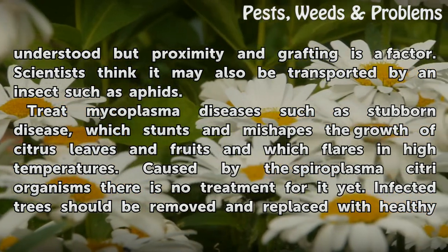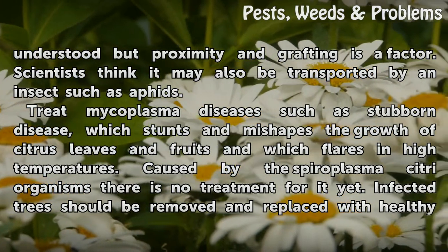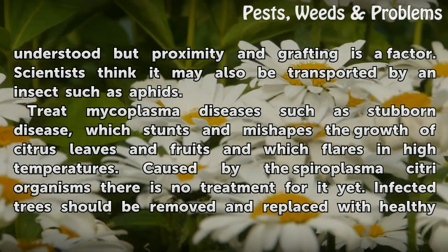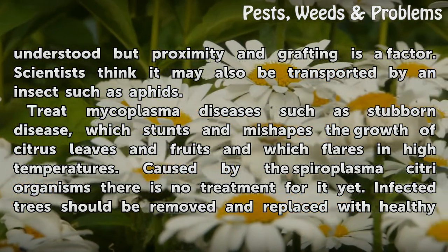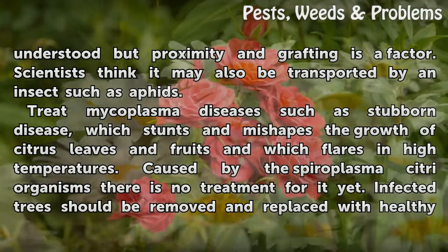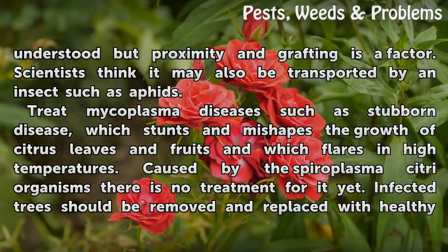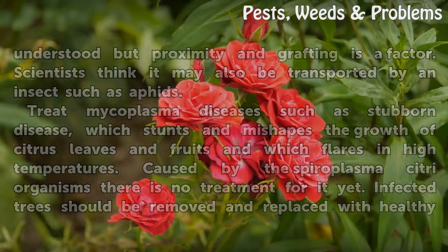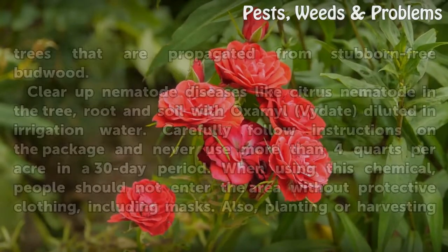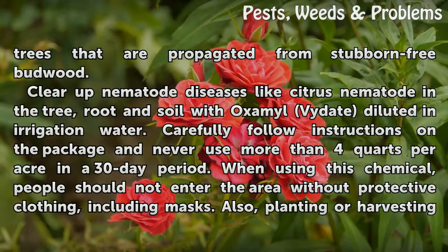Tree mycoplasma diseases such as stubborn disease, which stunts and mishaps the growth of citrus leaves and fruits and which flares in high temperatures, are caused by the spiroplasma citri organism. There is no treatment for it yet. Infected trees should be removed and replaced with healthy trees propagated from stubborn-free budwood.